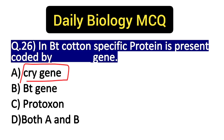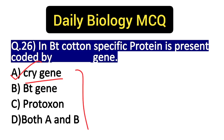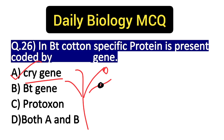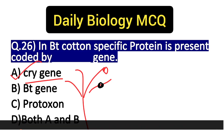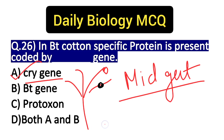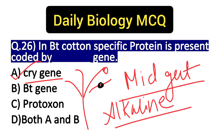यहां पर इसका सही answer हो जाएगा option A। BT cotton में inactive protein होती है। जैसे कोई cotton plant है और उस पर एक insect आया, तो जो BT inactive protein है वो उस इंसेक्ट के अंदर जाएगी और इंसेक्ट के mid-gut region में पहुंचेगी।